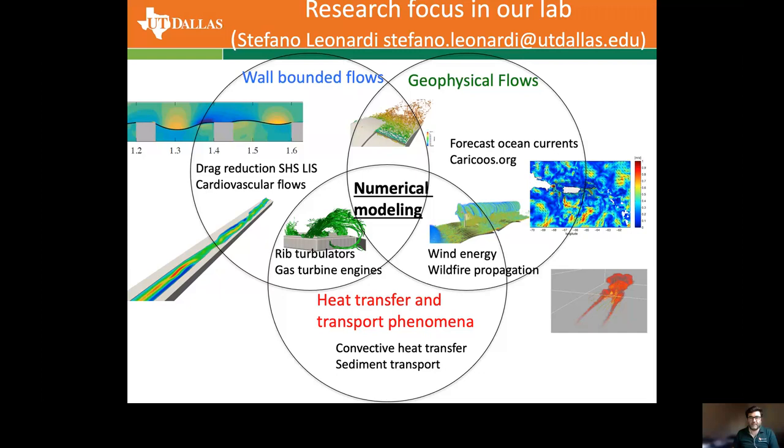The first focus area is wall-bounded flows — basically the turbulent flow near a wall. We have different interests that go from drag reduction through superhydrophobic or liquid-infused surfaces to cardiovascular flows. Basically, the blood flow into our arteries and the effect of stenosis on blood pressure, and how these stenoses grow due to the wall-shear stress.